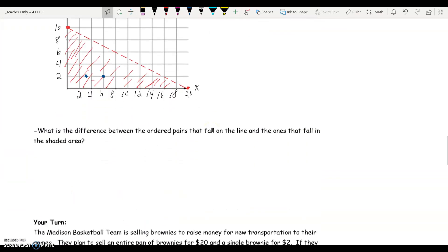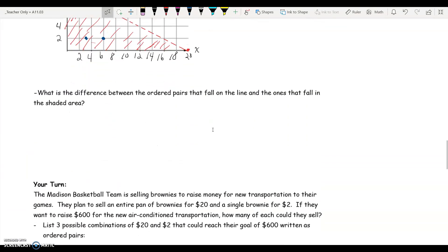So what's the difference between the ordered pairs that fall on the line and the ones that fall in the shaded area? Well the ones on the line, the points on the line are not included in the solution set.